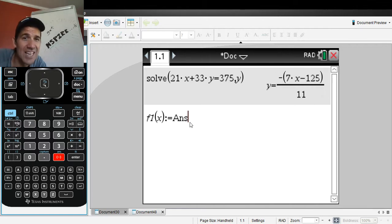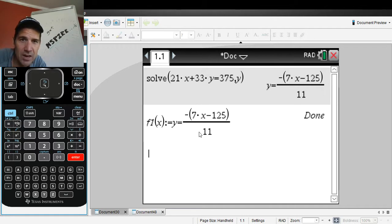It will pull the Y equals down as well as you'll see in a second. So when I hit enter, see it's got the Y equals in there. I don't really want the Y equals in there. You can still do it with that, but I just don't like the way it looks. So I'm going to actually go back up, just scroll up.